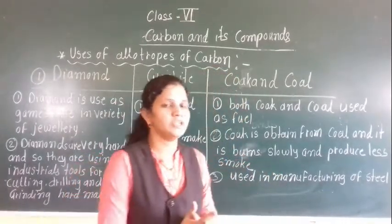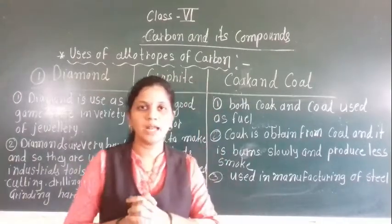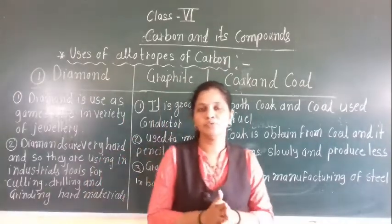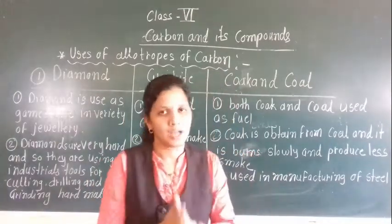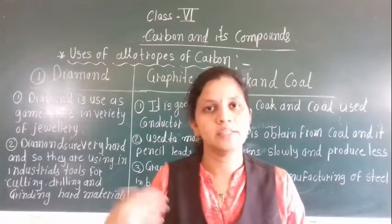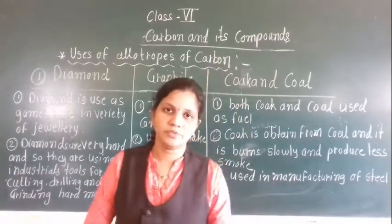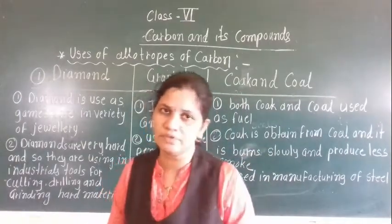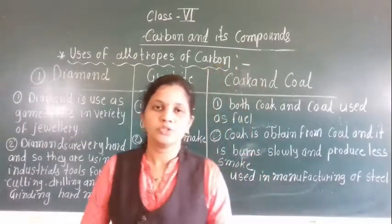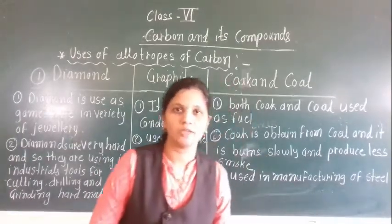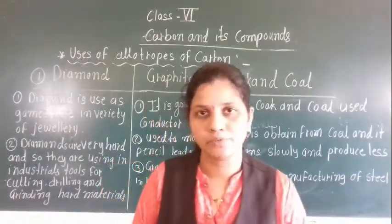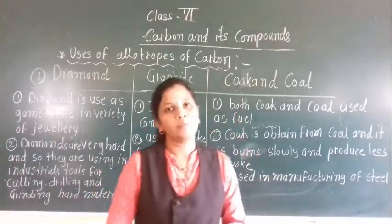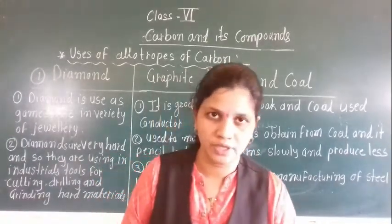In yesterday's lecture we discussed that allotropes of carbon are divided into two major types: crystalline allotropes of carbon, and the second one is amorphous or non-crystalline allotropes of carbon. Diamond and graphite are the crystalline allotropes of carbon, and coal belongs to the amorphous allotropes of carbon.